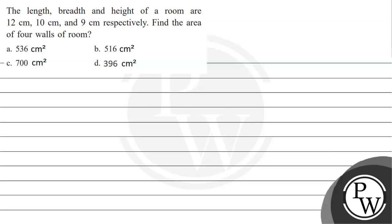Hello, let's see the question here. The length, breadth and height of a room are 12 cm, 10 cm and 9 cm respectively. Find the area of 4 walls of room.